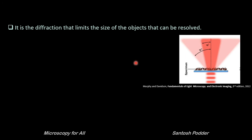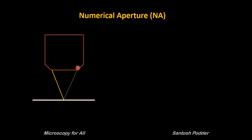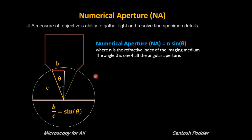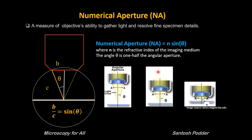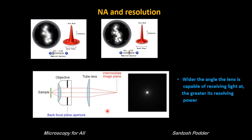So larger the number of diffraction orders collected by the objective, sharper and better are the details in the image. From here the concept of numerical aperture comes. Numerical aperture is the measure of an objective's ability to gather light and resolve fine specimen details. Numerical aperture is given by the formula NA = n × sin(θ), where n is the refractive index of the imaging medium and θ is the half angular aperture of the objective. Higher the NA, more the light-collecting capability, but remember: higher the NA, lower the working distance. Higher the numerical aperture, better the light-gathering capability and better the resolution.